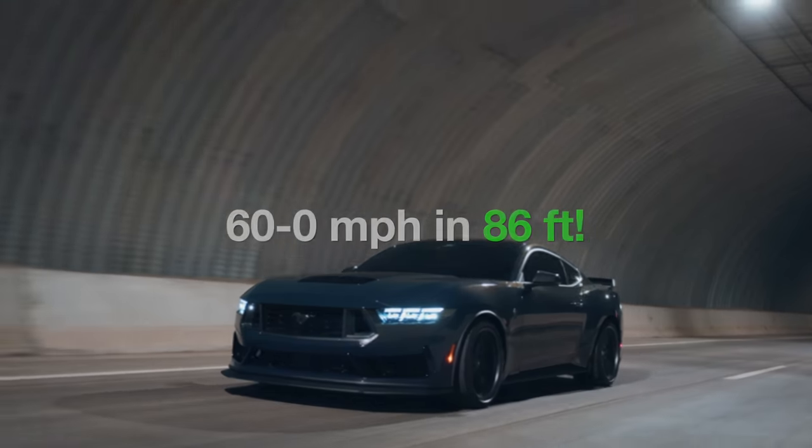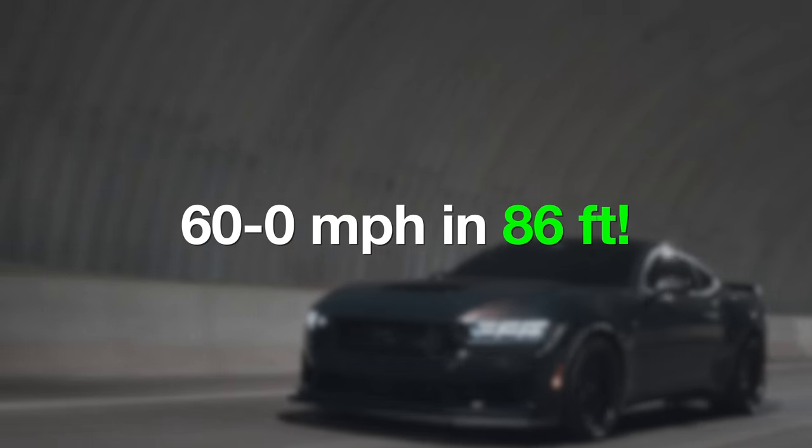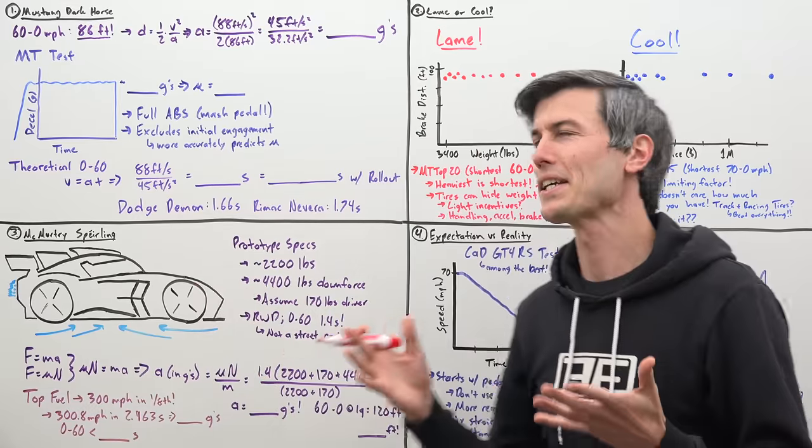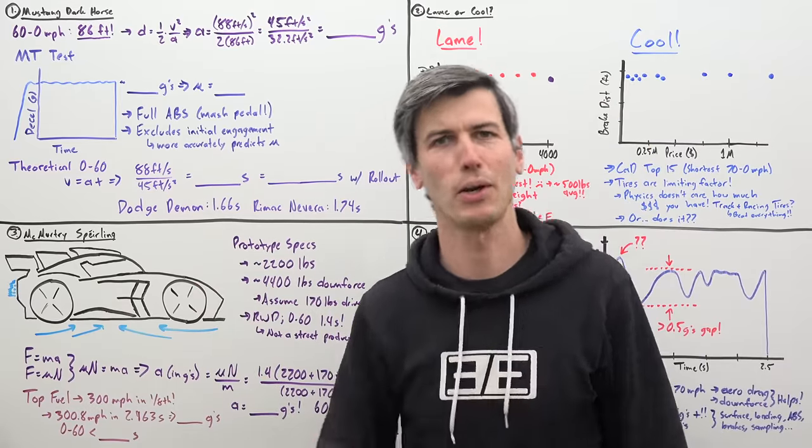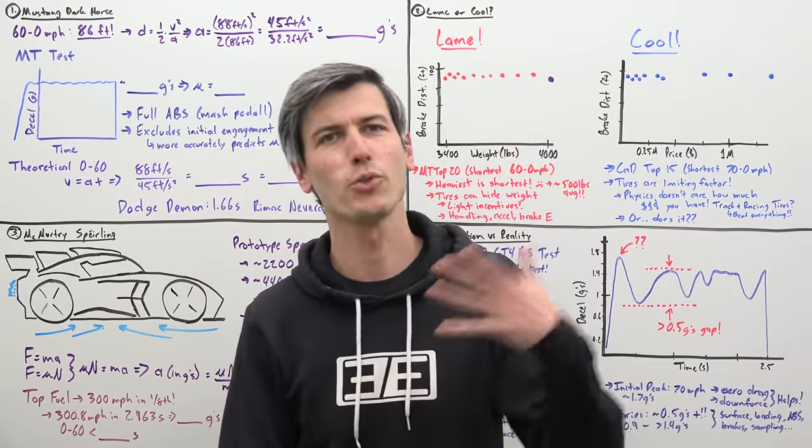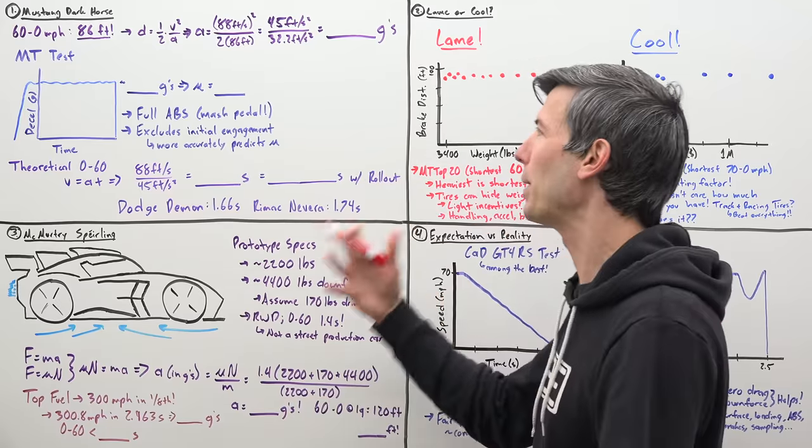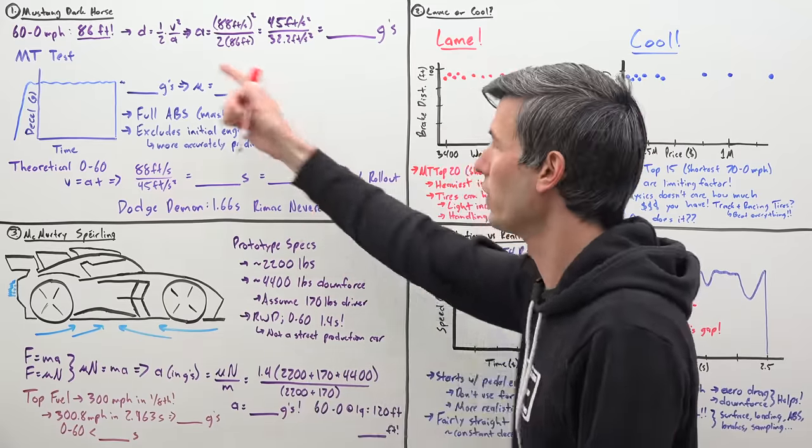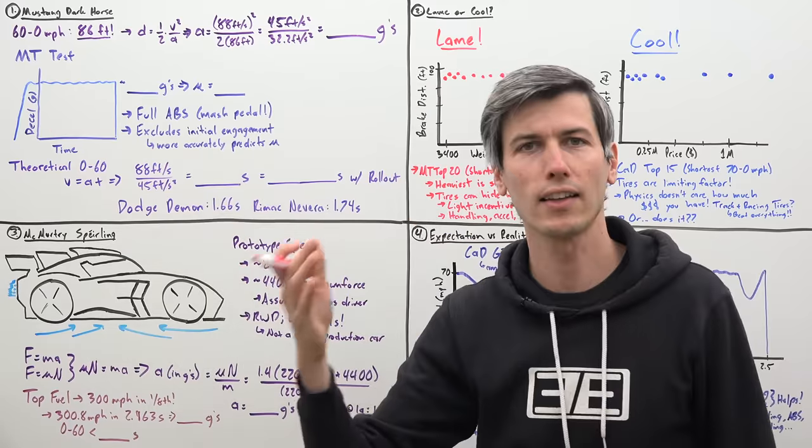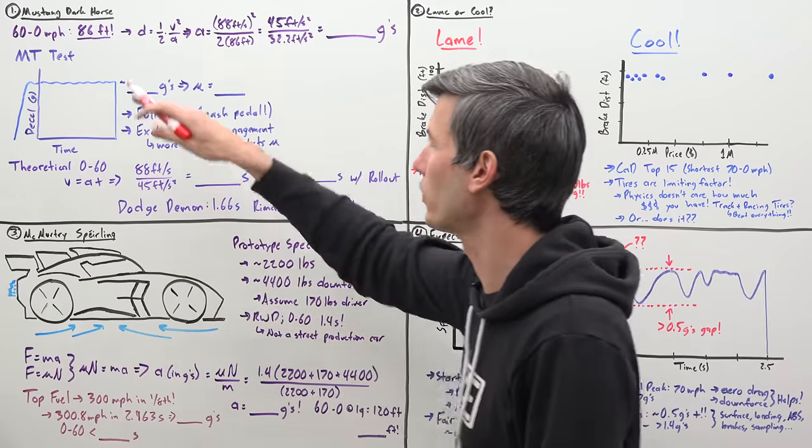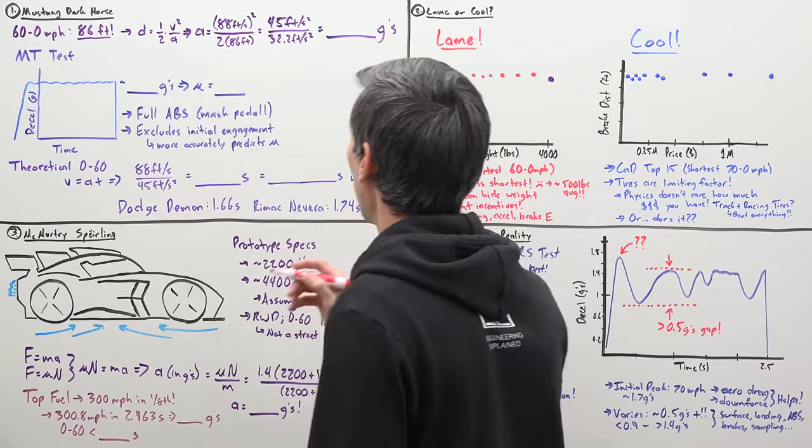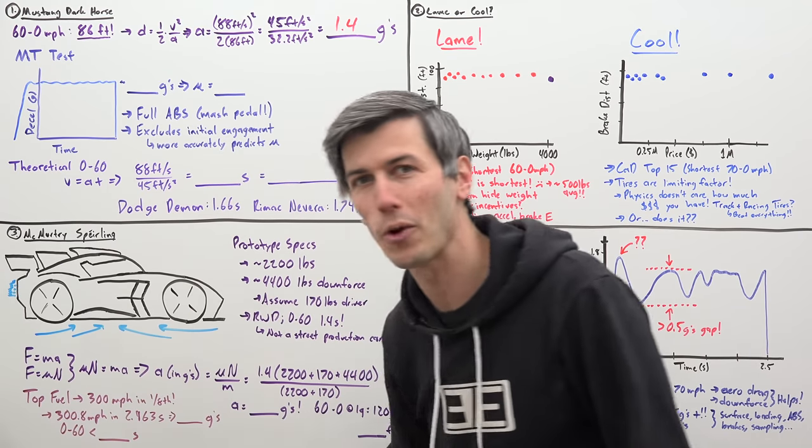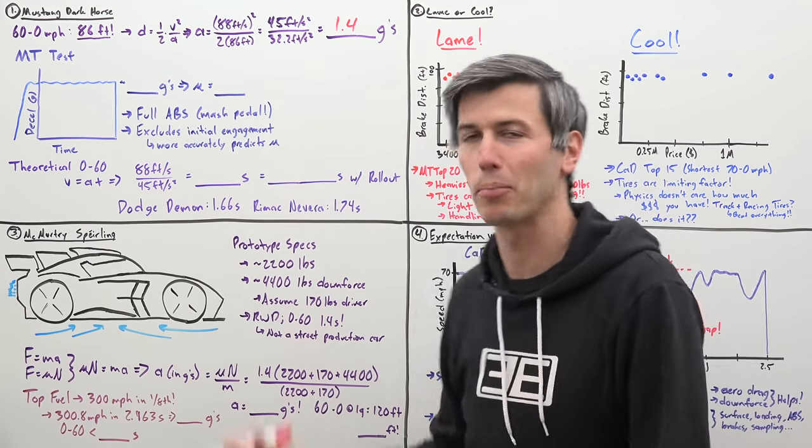That record, just 86 feet from traveling at 60 miles per hour to a full stop. So 86 feet to stop from 60 to 0 miles per hour, that's kind of a random jumble of numbers, who really cares? Let's give it a bit of context. If we're to calculate acceleration using these numbers here, in order to decelerate from 60 down to 0 in just 86 feet, you do a little bit of math and you find out that that means your average deceleration is 1.4 G's, which is extremely impressive.